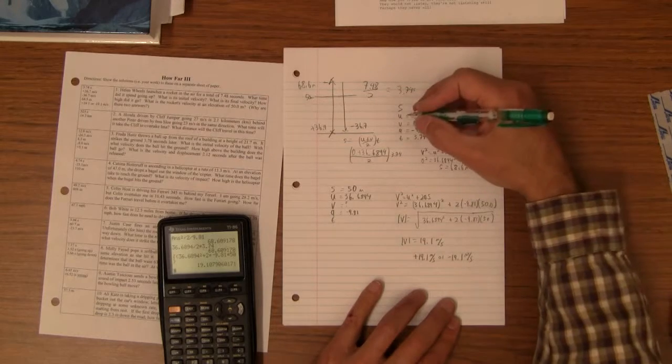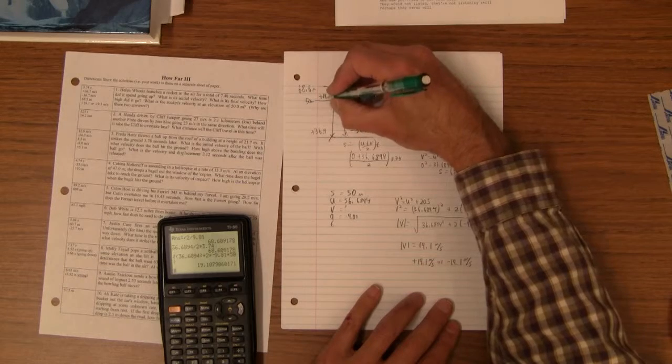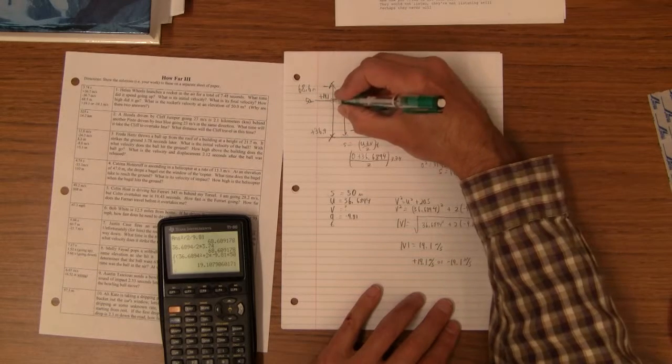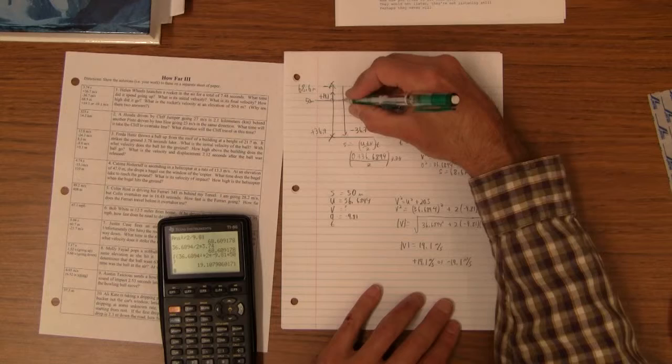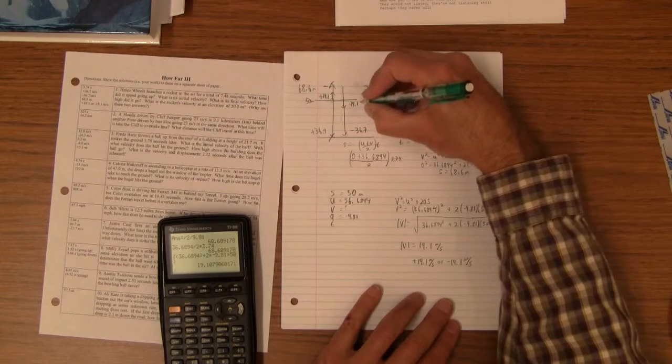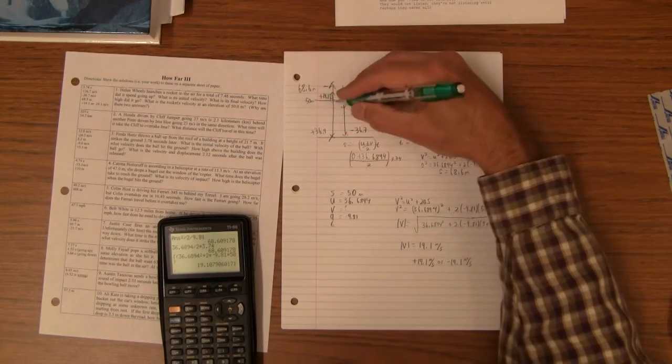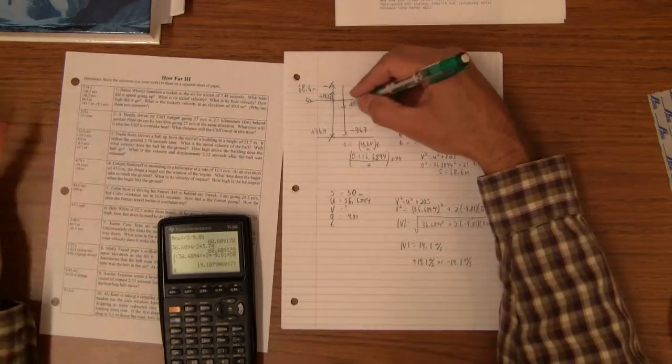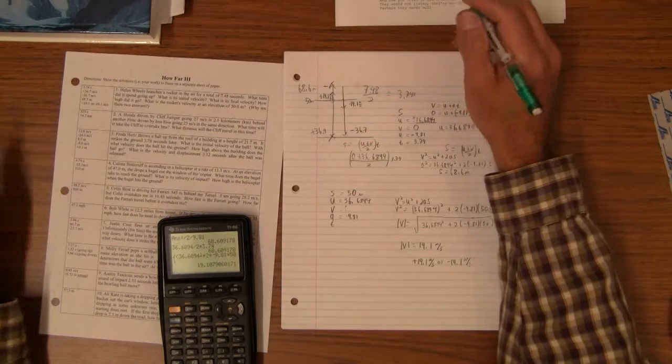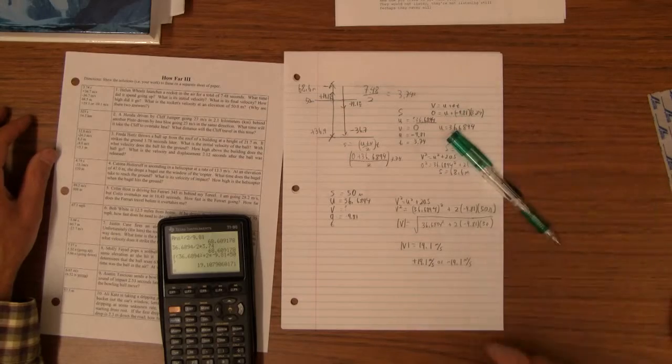And the meaning of this, the way this works is that on the way up, it's positive 19.1 and on the way down, it's negative 19.1 meters per second. It passes 50 meters twice, once on the way up, once on the way down. So there's the meaning of it all.